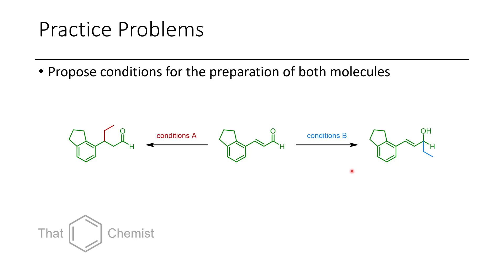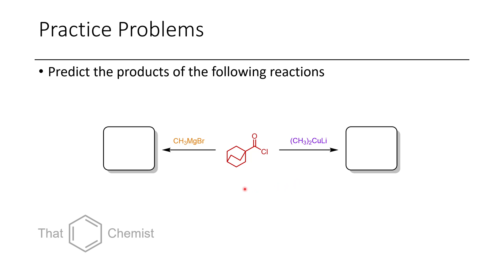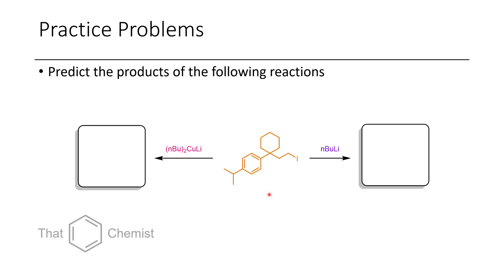So for this lecture I'd like to assign three practice problems. The first one is with this starting material, propose conditions that would afford the molecule on the left, as well as conditions that would afford the molecule on the right. This should be relatively straightforward if you're paying attention during today's lecture. Now the next problem is predict the products of the following reaction. We take this acyl chloride and we treat it with methylmagnesium bromide, alternatively we treat it with dimethyl lithium cuprate, and this will afford some other products, so predict what those are. And finally we'll take this primary alkyl iodide, treat it with a cuprate or a lithiated species, and predict what the products will be.